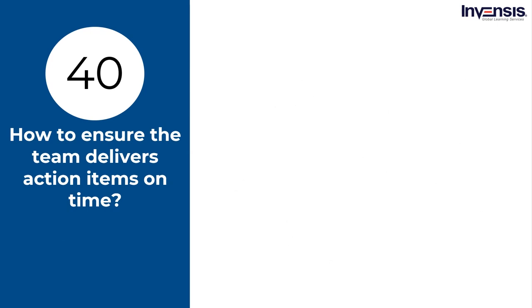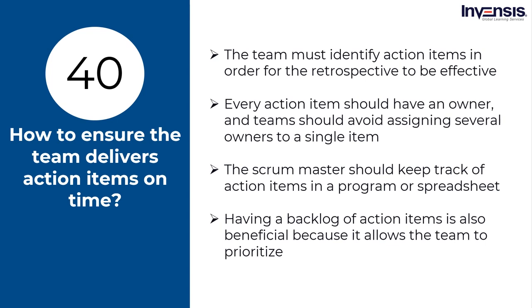How to ensure the team delivers action items on time? The team must identify action items for the retrospective to be effective. The action item should be closed as soon as possible, and the Scrum Master should take steps to accomplish this. Every action item should have an owner, and teams should avoid assigning several owners to a single item since ownership becomes diluted. The Scrum Master should keep track of action items in a program or spreadsheet available to everyone on the team. Having a backlog of action items is beneficial because it allows the team to prioritize. The team should go over items from the last retrospective and discuss their status so everyone knows what further needs to be done. A retrospective tracker categorizes action items into priority, ownership, status, description, identified date, and kind.